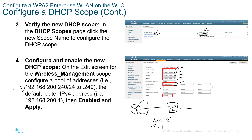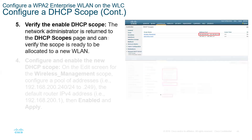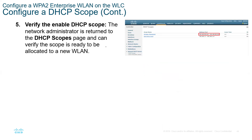The default gateway is 192.168.200.1. Then the status should be enabled. Once it's enabled, apply and save — and you have your DHCP scope created. Verifying what we configured: the name is 'wireless management' and the scope is 192.168.200.240 to .249.